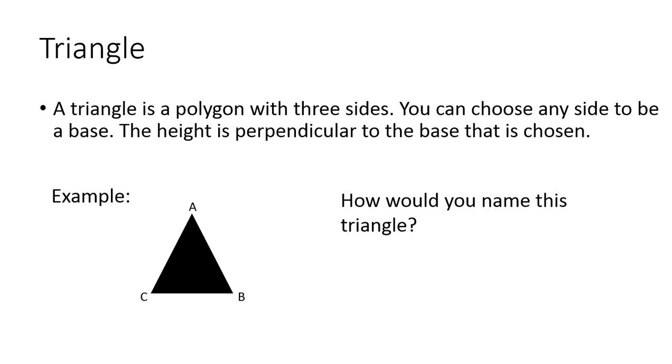All right, next we have a triangle. A triangle is a polygon with three sides. You can choose any side to be a base. The height is perpendicular to the base that is chosen. So in this example, I have a triangle represented. And so how would you name this triangle? You would name it by triangle A, B, C.